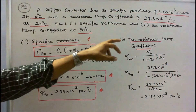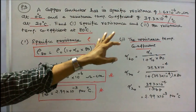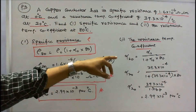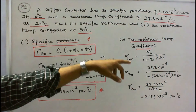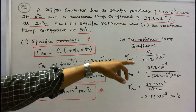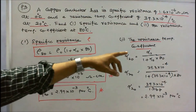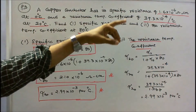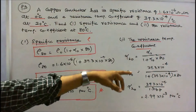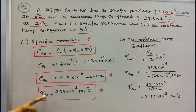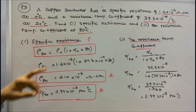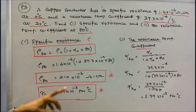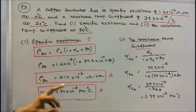Next, we have to find the resistance temperature coefficient. The temperature coefficient at 80 degree centigrade, alpha at 80, equals alpha naught divided by 1 plus alpha naught into 80. Alpha naught is 39.3 into 10 to the power minus 4. Substituting in the formula, the temperature coefficient at 80 degree centigrade is equal to 2.99 into 10 to the power minus 3 per degree centigrade.